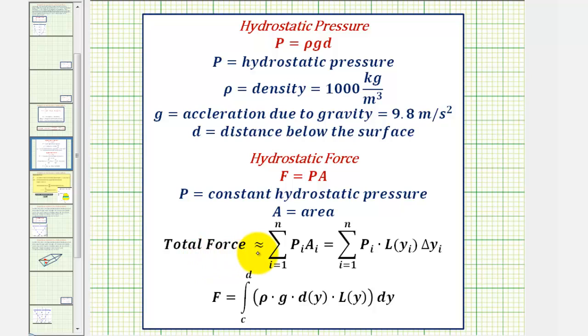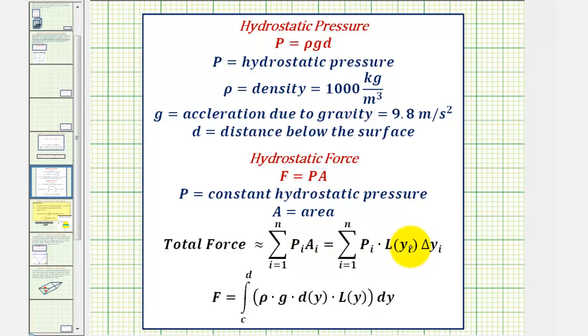So as we sum more and more of these increments of force, it approaches the total force on the end where A sub i, the area, would be equal to L(y), the horizontal length times Δy, which would give us the height. So this part is the area and P is the pressure where the pressure is equal to density times acceleration due to gravity times the depth.